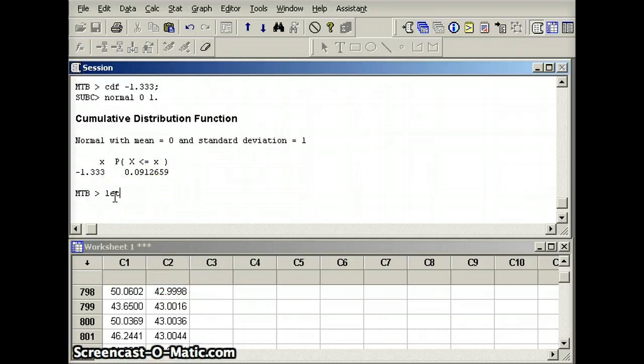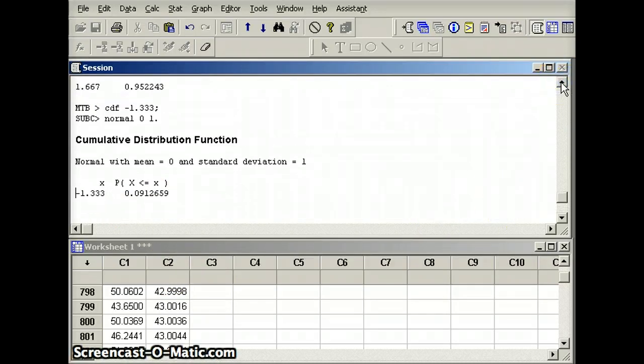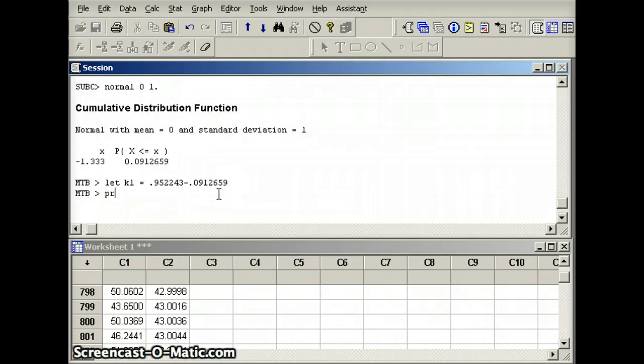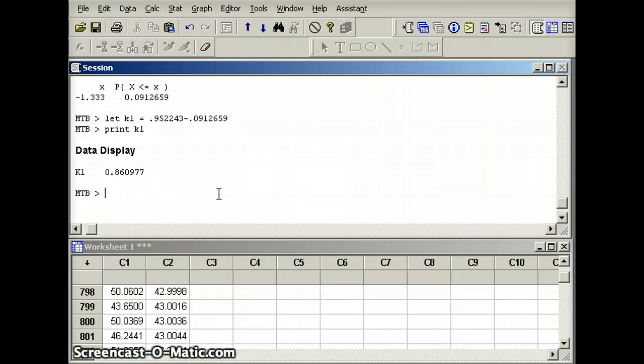So I've got to subtract those two things. I'm going to say let K1 equal, the first number we wanted was 0.952243 minus the second number, 0.0912659. Then I will ask it to print K1. And this will also give us 0.86097 or about 0.8610.